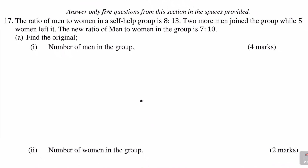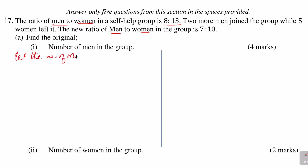Let's go to the first part of the question where we are given that the ratio of men to women in a self-help group is 8 to 13. Two more men joined the group while five women left it, and the ratio therefore changed — men to women became 7 to 10. To solve this question easily, we shall begin by letting the number of men be x. This is the original number of men. We have the ratio of men to women given as 8 to 13.